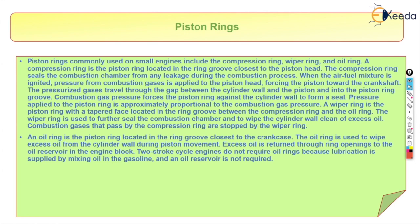An oil ring is the piston ring located in the ring groove closest to the crankcase. The oil ring is used to wipe excess oil from the cylinder wall during piston movement. The excess oil is returned through the ring's opening to the oil reservoir in the engine block.